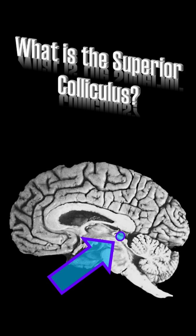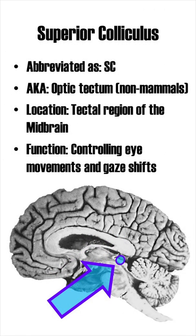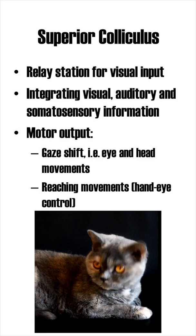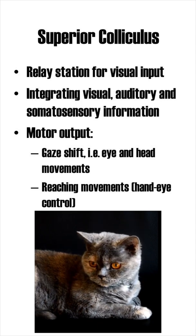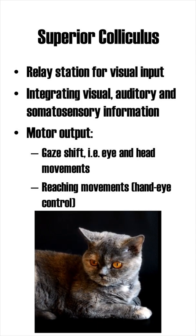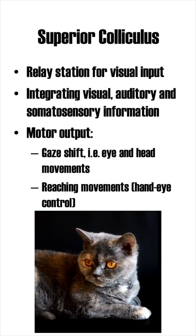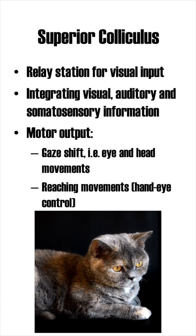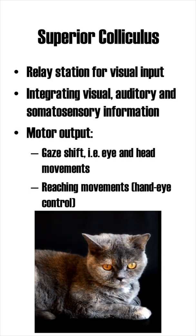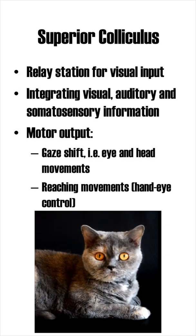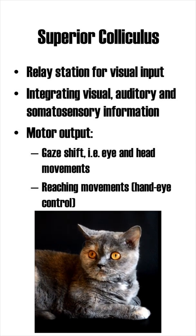What is the superior colliculus? The superior colliculus is located at the tectal region just above the inferior colliculus. Its main function is the control of gaze. Superficial layers of the superior colliculus receive input from both eyes and send it forward towards the visual cortex. Deeper layers also receive information from auditory and sensory systems and integrate it with the visual information.